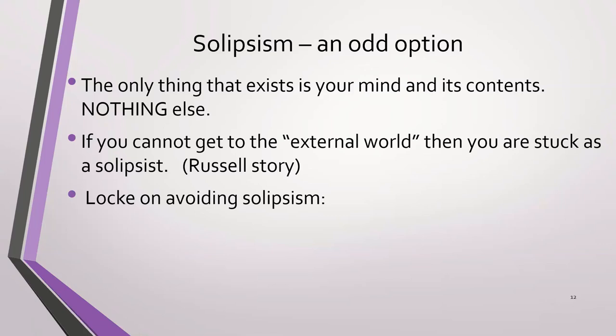Locke had a strategy for avoiding solipsism. And this is really significant for his theory. Now, one reason he says that solipsism fails is because we lack control over what we see and hear and smell, et cetera. Our perceptions that we experience in the world, we don't have control of them.